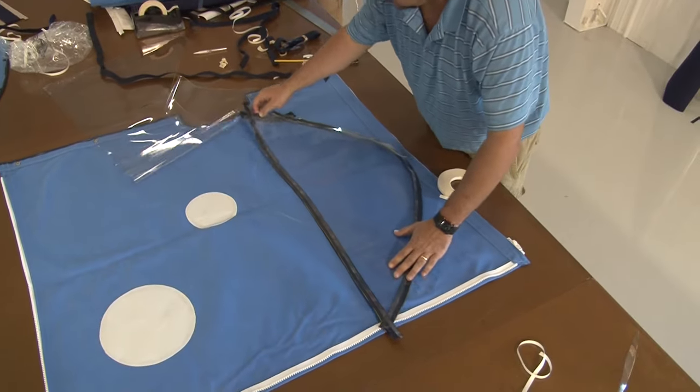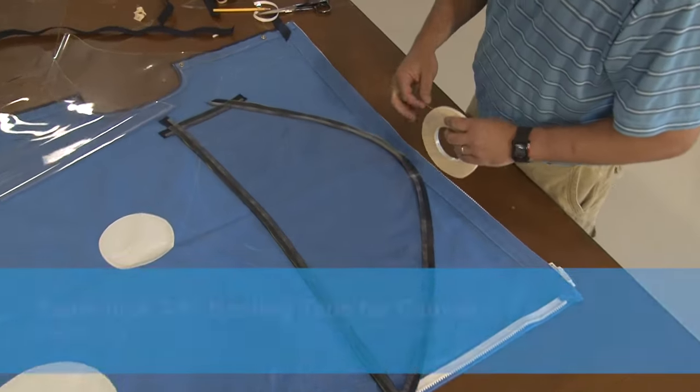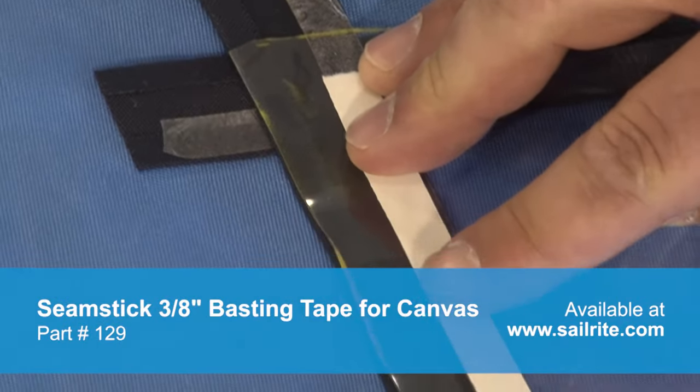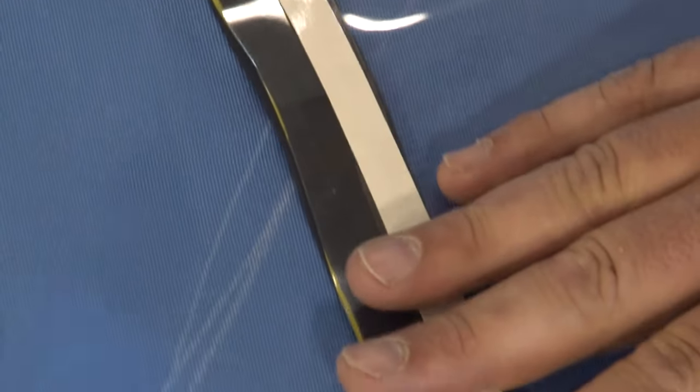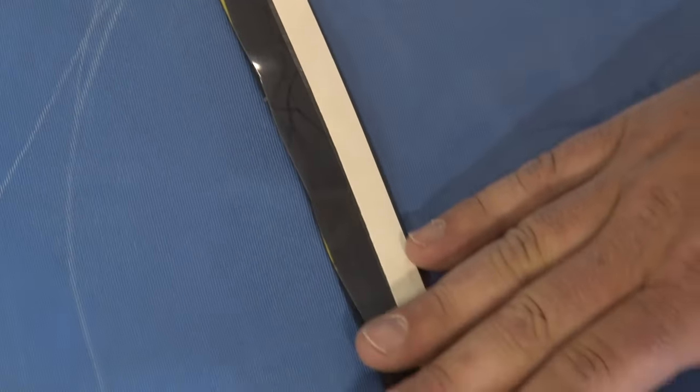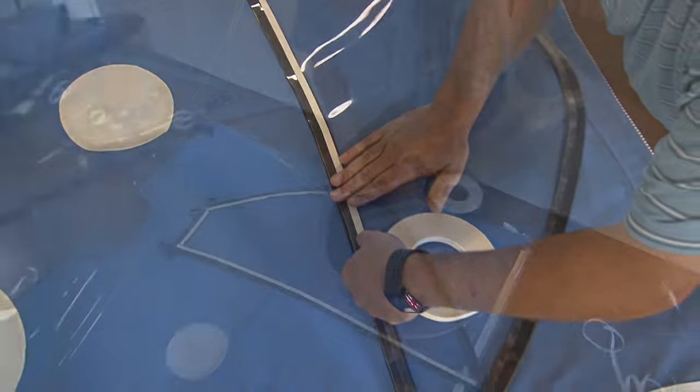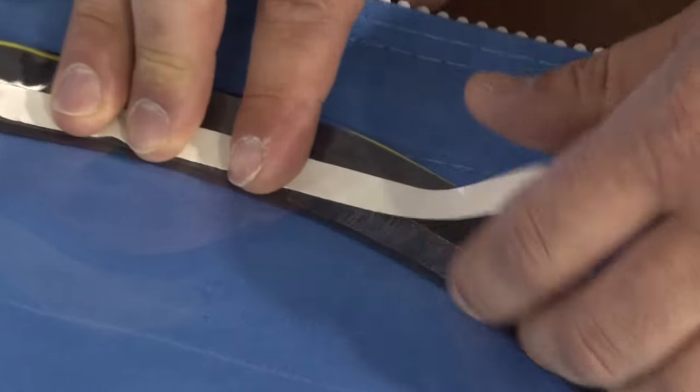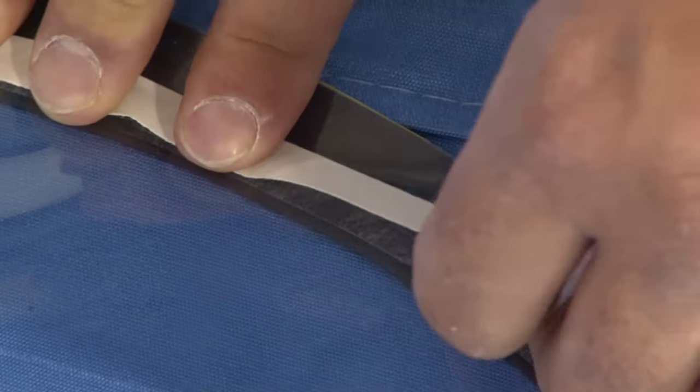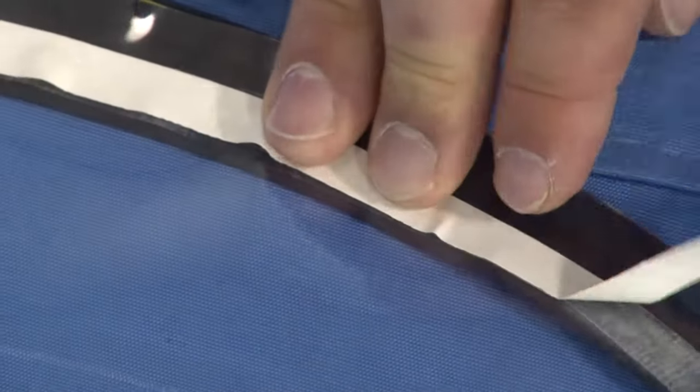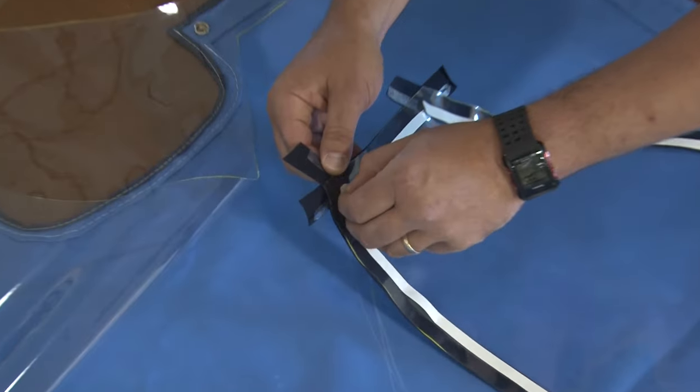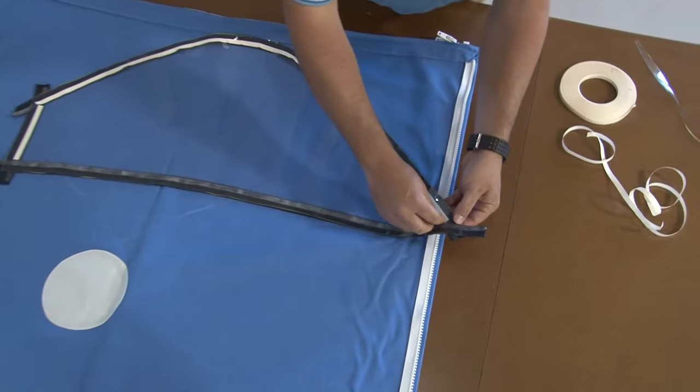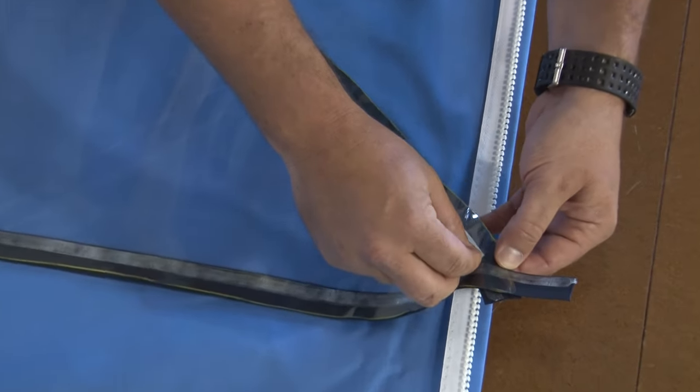Now turn the window over and we will apply the double sided basting tape or seamstick to this side of the window. Notice we are applying it right on top of that basting tape that we used to put the bias binding down. Do that around the entire perimeter. Here at the curve you may get a few bubbles in the double sided tape as you take the tape around the curve—that is no problem at all. Peel off the transfer tape revealing the glue on all of the edges or sides of your window.